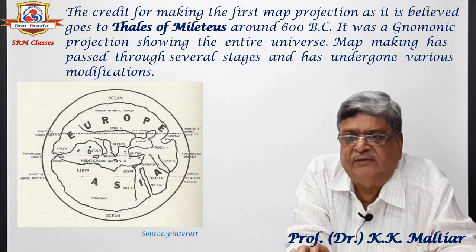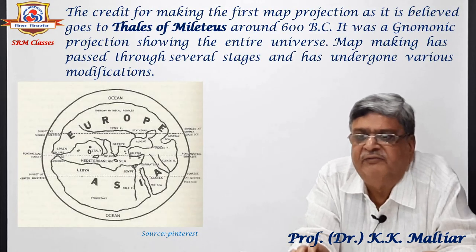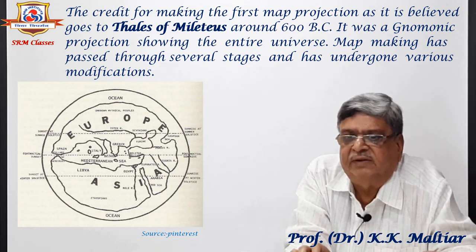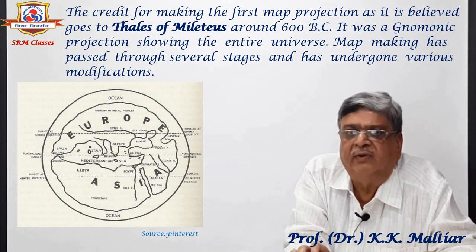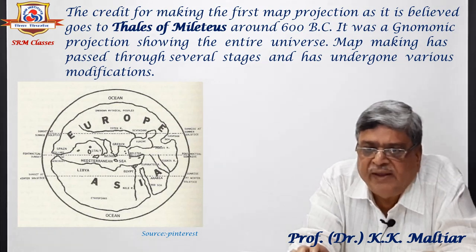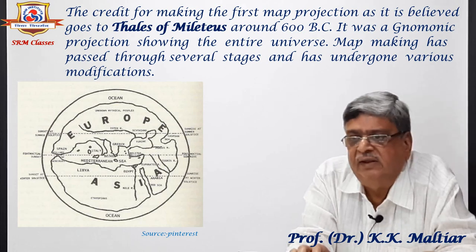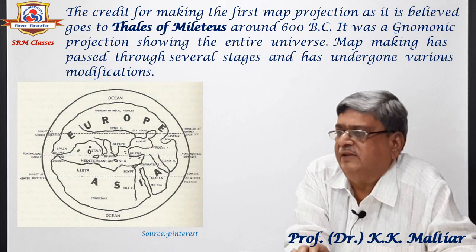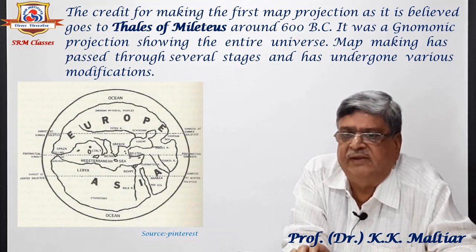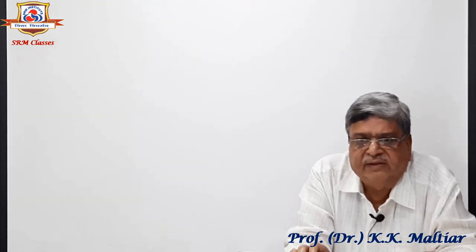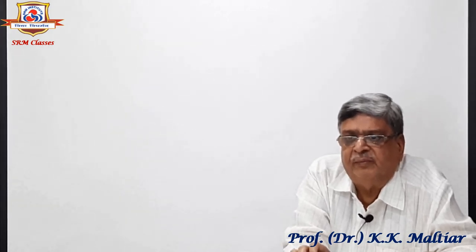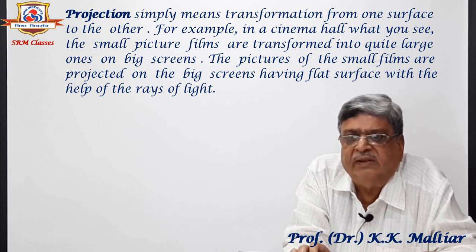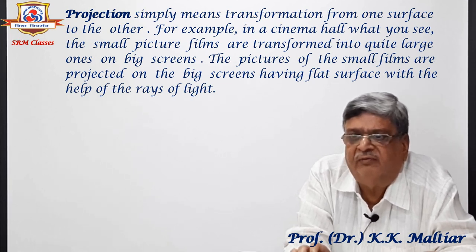The credit for making the first map projection, as it is believed, goes to Thales of Miletus around 600 BC. It was a gnomonic projection showing the entire universe. Map making has passed through several stages and undergone various modifications. We will discuss the history of map projections later. Here we are concerned more about the concept of map projection. Projection simply means transformation from one surface to the other.